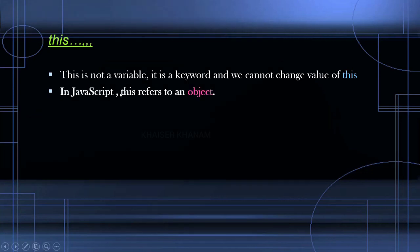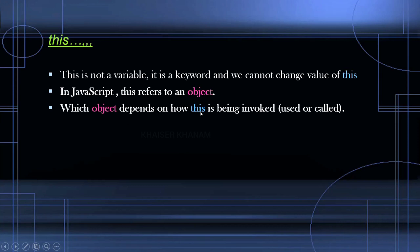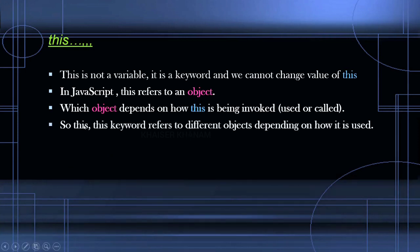In JavaScript, 'this' refers to an object. Inside an object, if I use 'this', it will refer to that particular parent object. Also, what object 'this' depends on is how it is being invoked. The 'this' keyword refers to different objects depending on how it is used — whether it is used inside an object method, inside a function, inside the program, or inside an event. Based on that, 'this' will have different behavior.